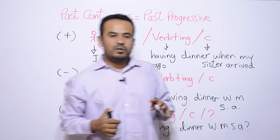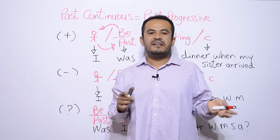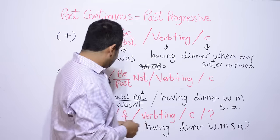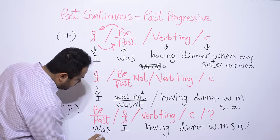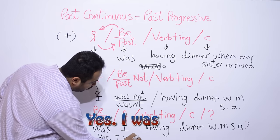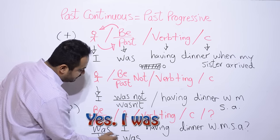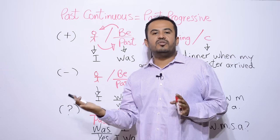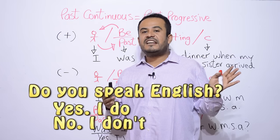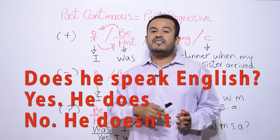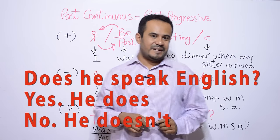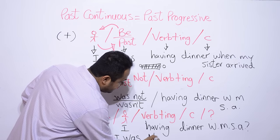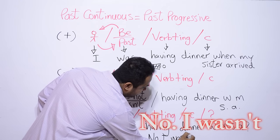Ahora, ¿estaba yo cenando cuando mi hermana llegó? Voy a, tenemos dos posibles respuestas. La primera puede ser que sí, que en realidad sí estaba cenando. O puedo decir que no estaba yo cenando. Si voy a decir que sí estaba cenando, entonces voy a responder yes, I was. ¿Por qué? Porque preguntas con was, respondes con was. Es algo que siempre se debe de hacer en el inglés. En presente simple preguntas con do, respondes con do. Do you speak English? Yes, I do. No, I don't. Entonces aquí was I. Yes, I was. O la negativa nos quedaría no, I wasn't.